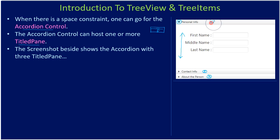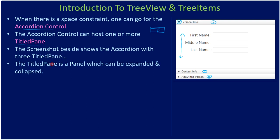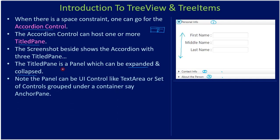So there are a total of three TitledPanes hosted by the Accordion control. The TitledPane is a panel which can be expanded or collapsed. Here is an example showing expanded and collapsed states — two of the panes are in a collapsed state.